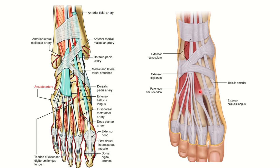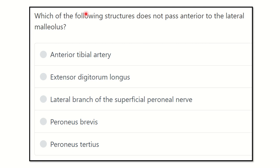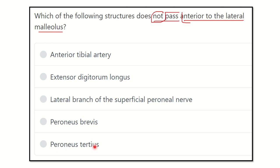Hey everyone, welcome to another question and association for MRCA section. The question is: which of the following structures does NOT pass anterior to the lateral malleolus? We need to find out which structure does not pass anterior to the lateral malleolus. The options are: anterior tibial artery, extensor digitorum longus, lateral branch of the superficial peroneal nerve, peroneus brevis, and peroneus tertius.